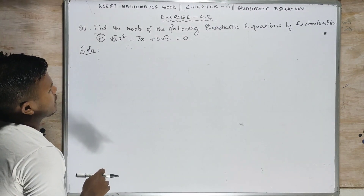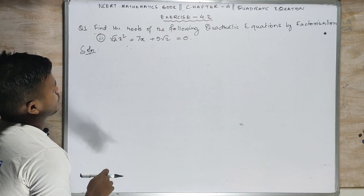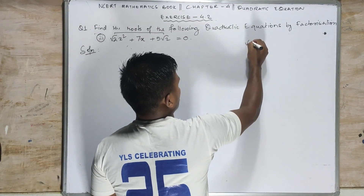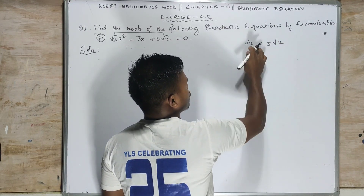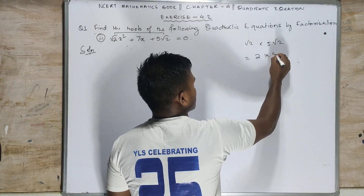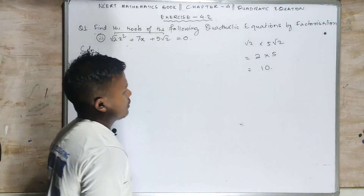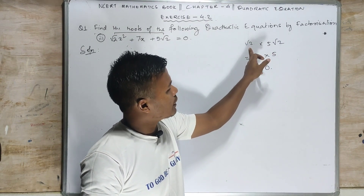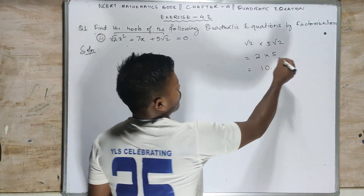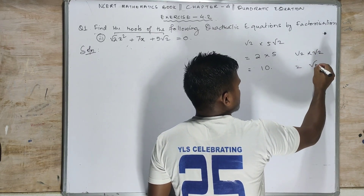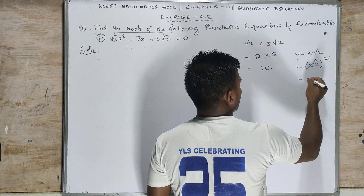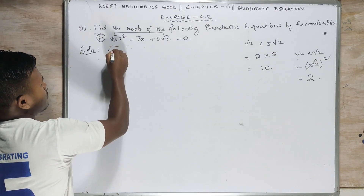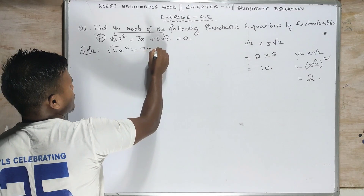In question number 3 we have: root 2 x squared plus 7x plus 5 root 2. As I told you before, multiply the first and last terms: root 2 into 5 root 2. Root 2 into root 2 is 2, and 2 into 5 is 10. This is because root 2 multiplied by root 2 — the square and root cancel — giving 2. So root 2 into root 2 equals 2. Write: root 2 x squared plus 7x plus 5 root 2 equals 0.